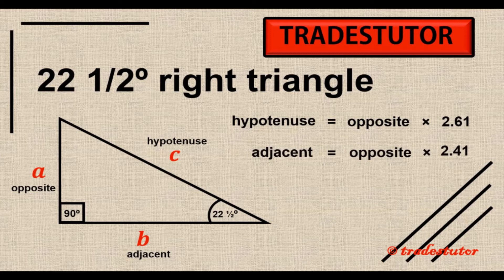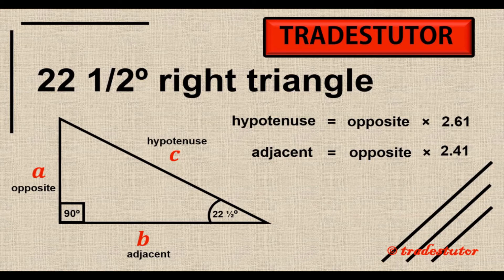All right, so there you have it. That's three different: you got the Pythagoras theorem, you have a 45, and a 22. That's it. And we'll do another video that's going to show you some examples, but for right now, that is it.